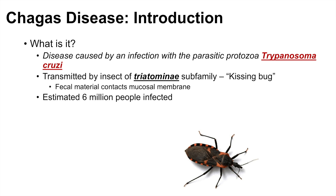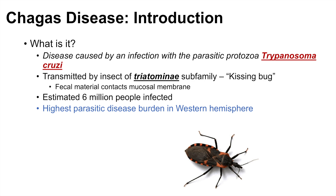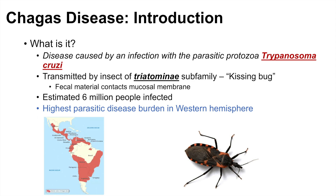It's estimated that about six million people are infected with Chagas disease, and interestingly it constitutes the highest parasitic disease burden in the Western Hemisphere, even more so than malaria. The estimated range of Chagas disease extends from northern Mexico — and some estimates include parts of the southern United States — all the way down to Argentina.